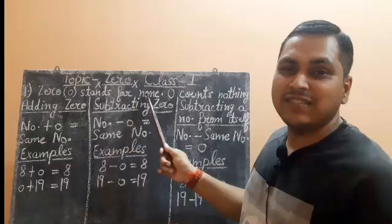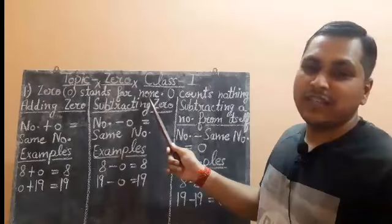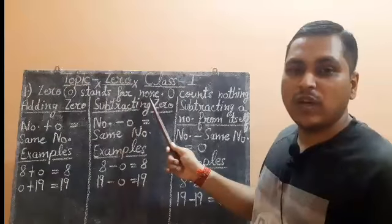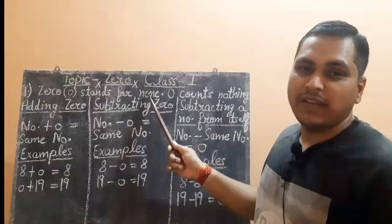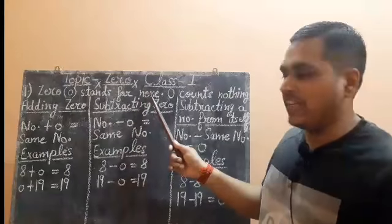Whenever you are adding or subtracting zero to any number, it doesn't make a difference. Always you will get the same number whenever you are adding it or subtracting it.